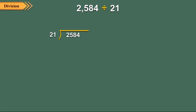Let us divide 2,584 by 21. Since there are 2 digits in the divisor, we carry out division taking 2 digits from the extreme left of the dividend. So divide 25 by 21. The quotient is 1 and remainder is 4. Bring down the next digit, that is 8, to the right of the remainder 4. The number formed is 48. Now divide 48 by 21. The quotient is 2 and the remainder is 6.